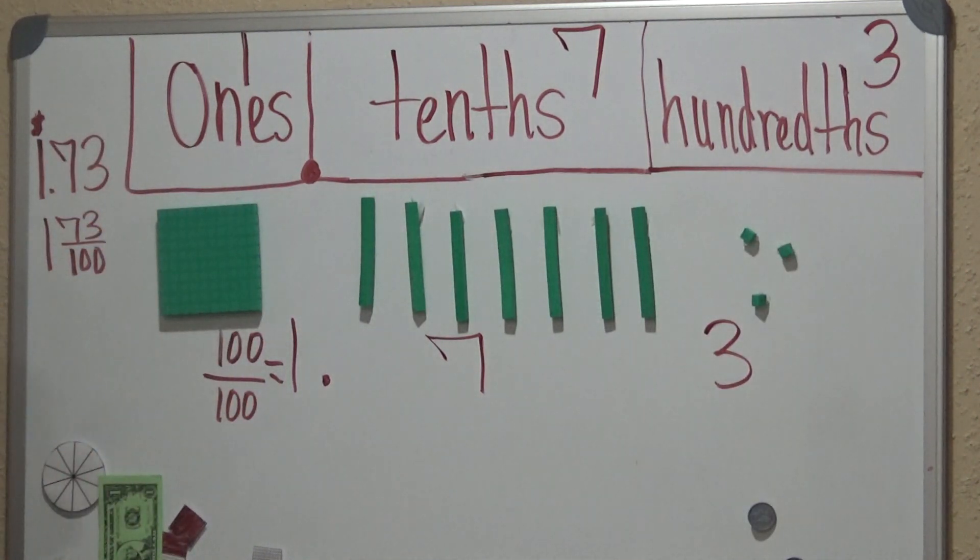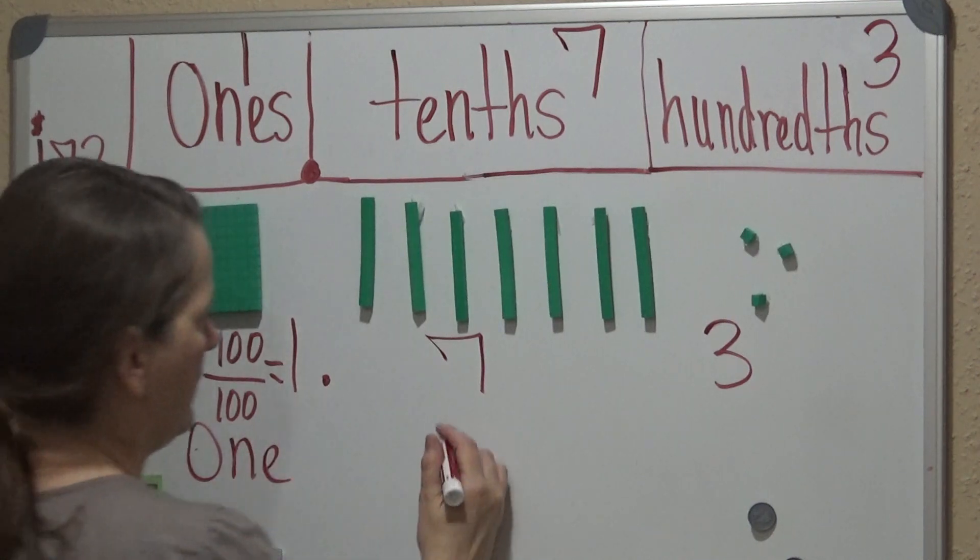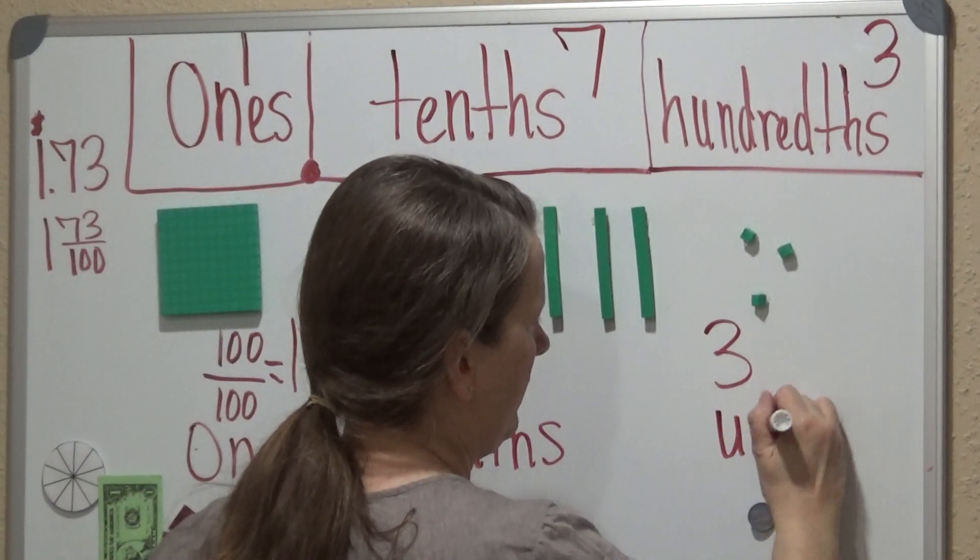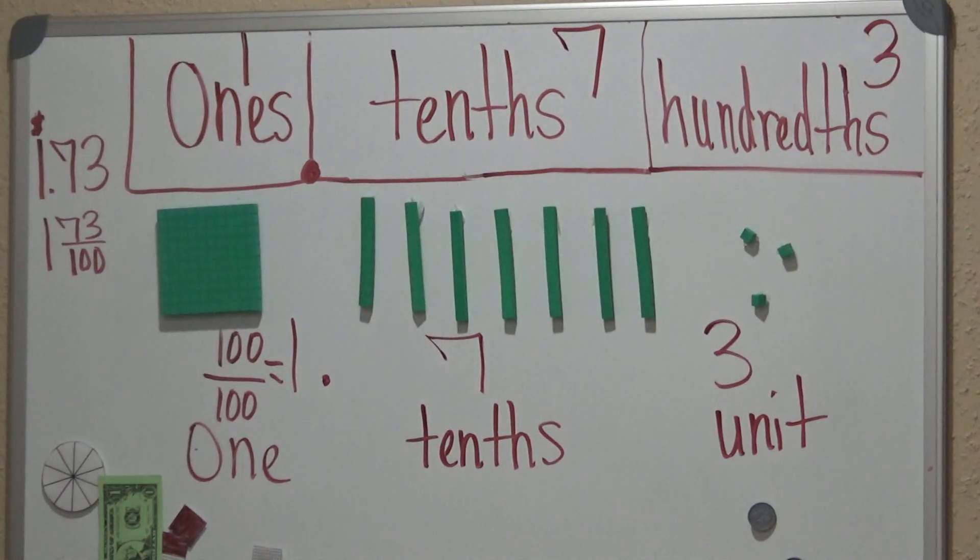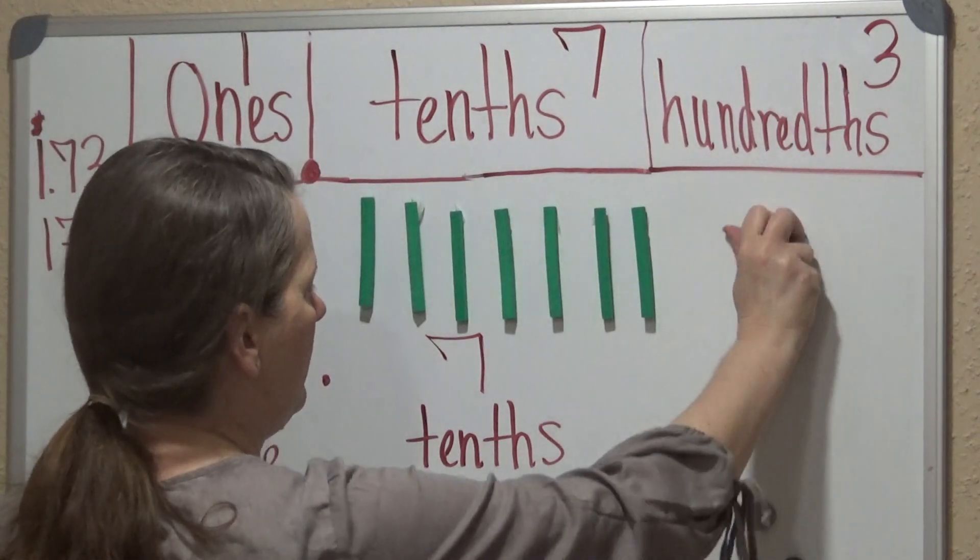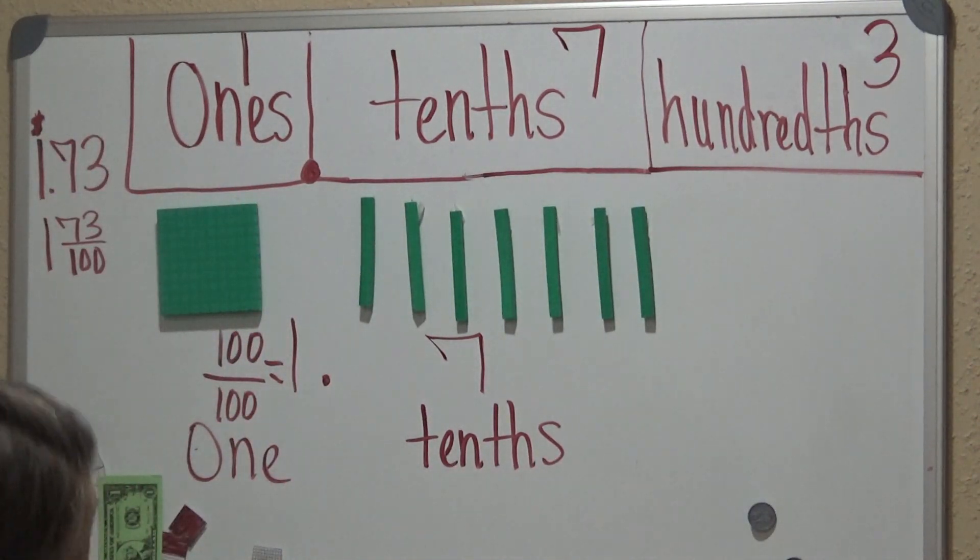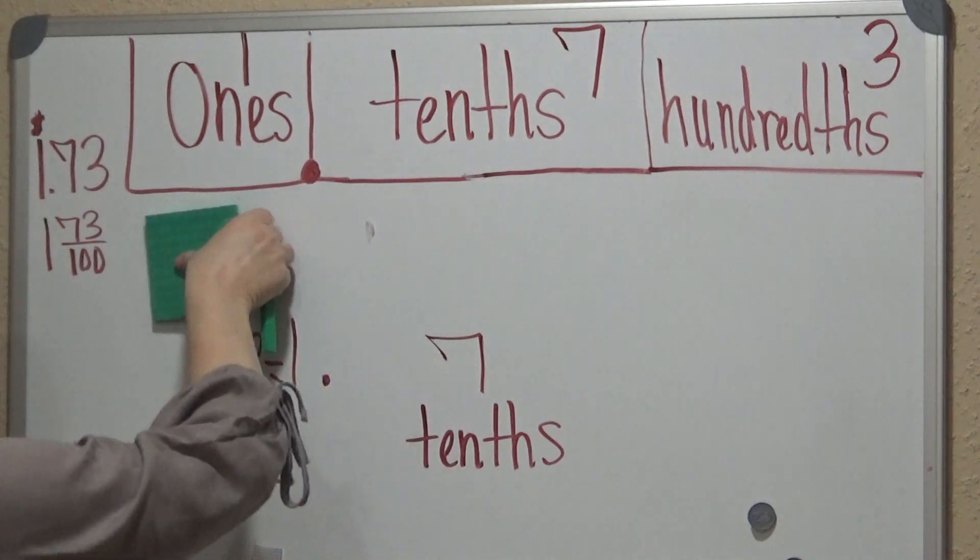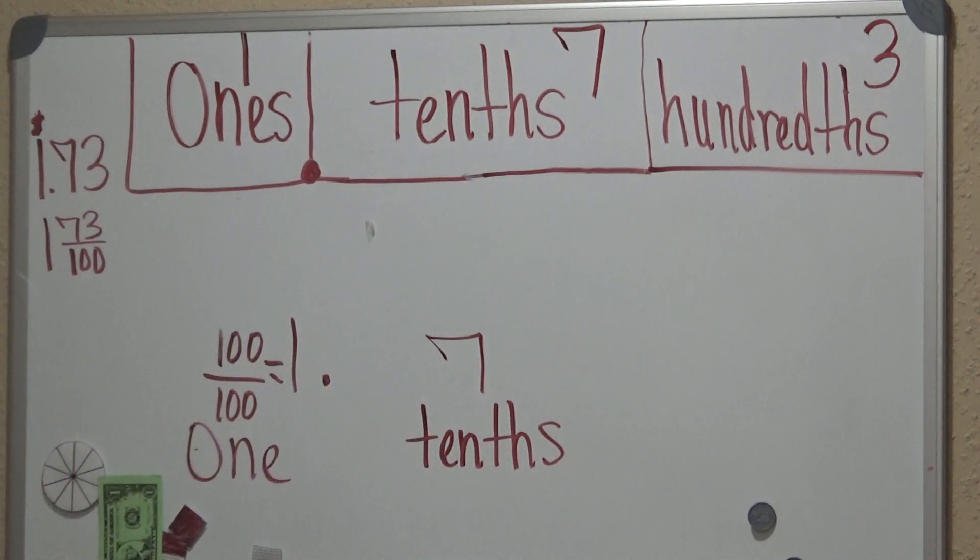So this is a whole, this is tenths, and this is a unit. This is 1, tenths, and unit. We'll go ahead and take this away now, and I'm going to use something that I think is very important. We'll get the representing money out of the way.